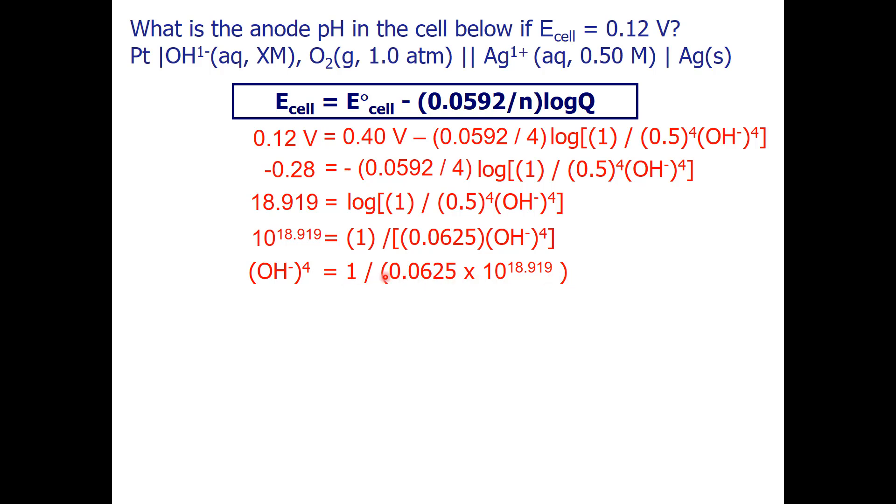Now I just need to multiply these through, and now I need to take the 4th root, so I will take the 4th root of this value. I get that the hydroxide concentration is 3.72 times 10 to the minus 5 molar.